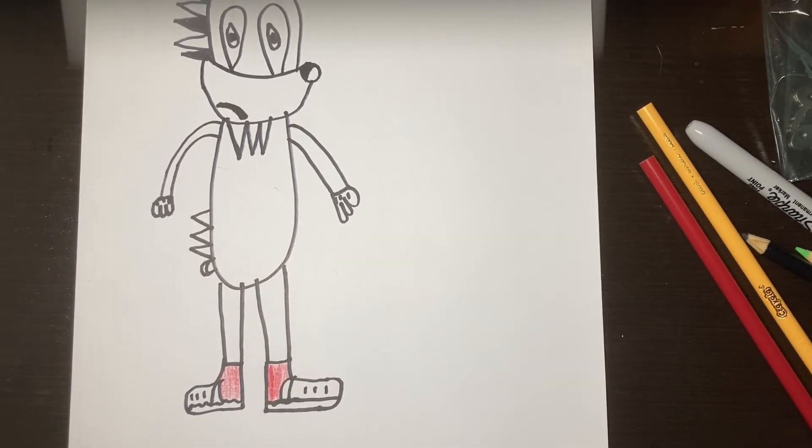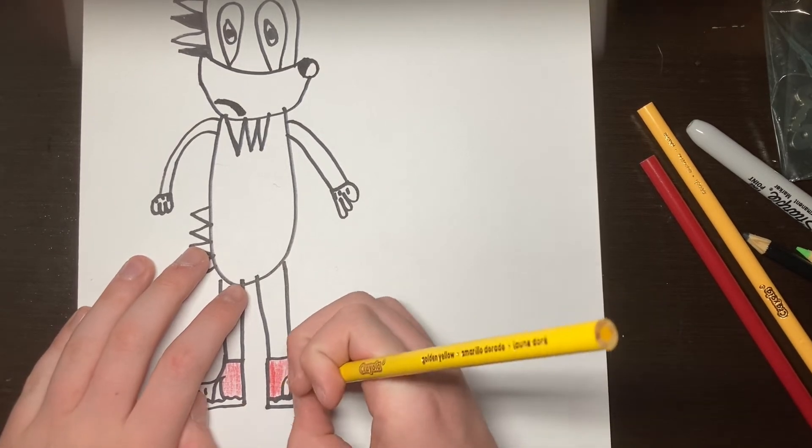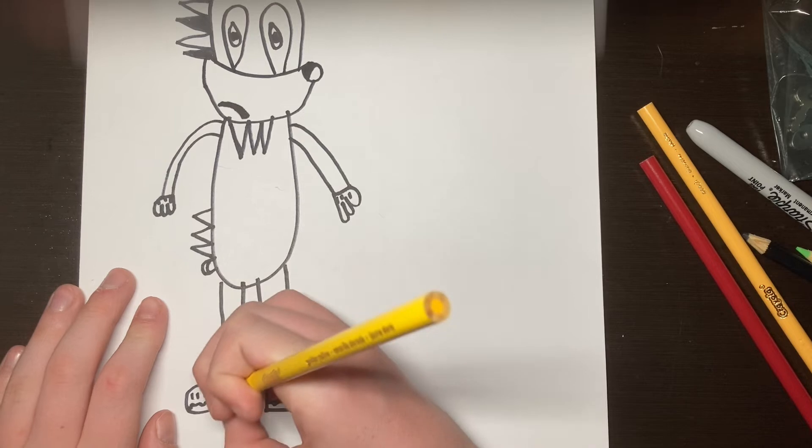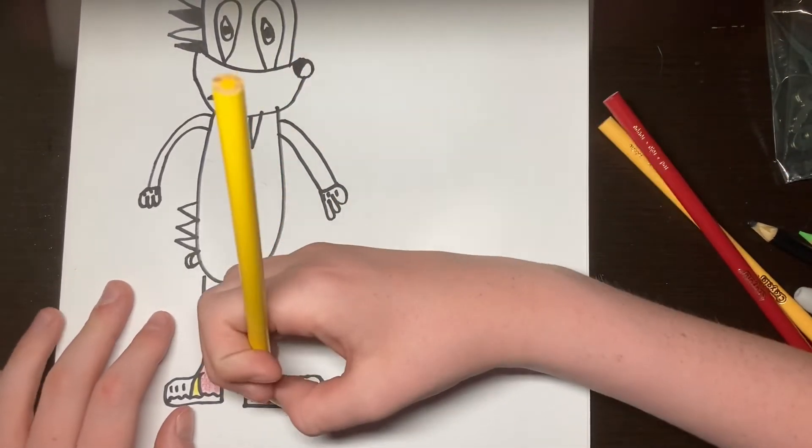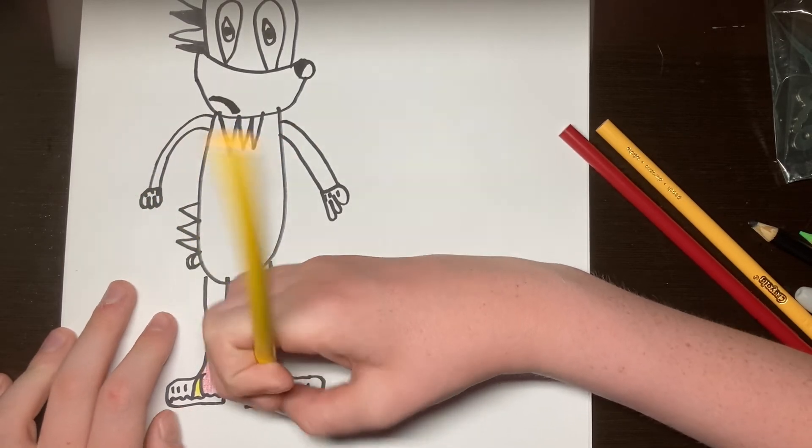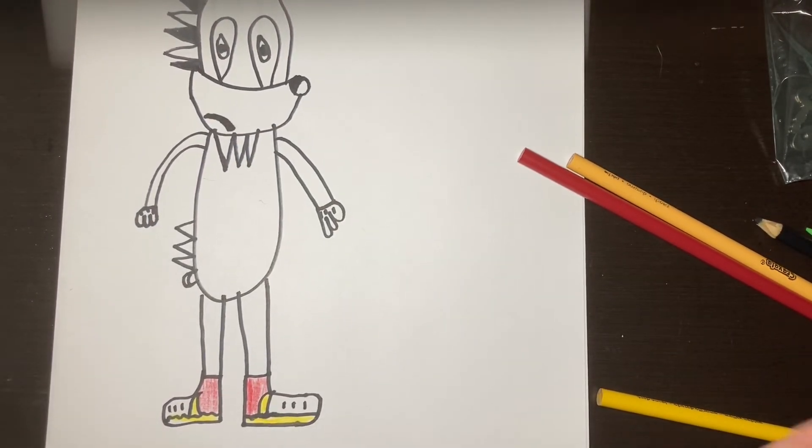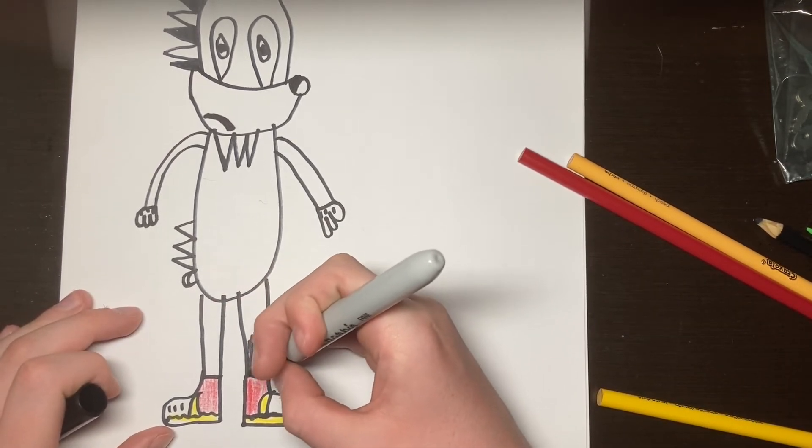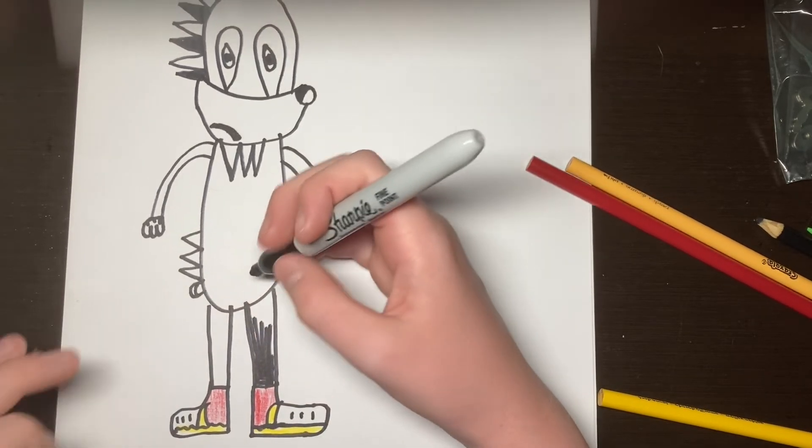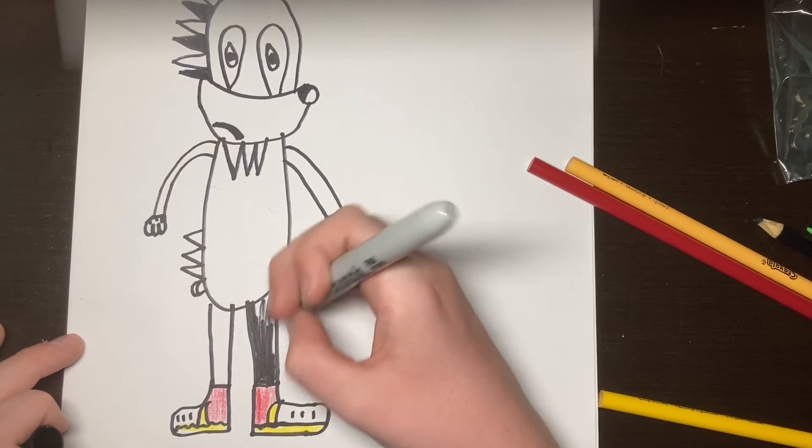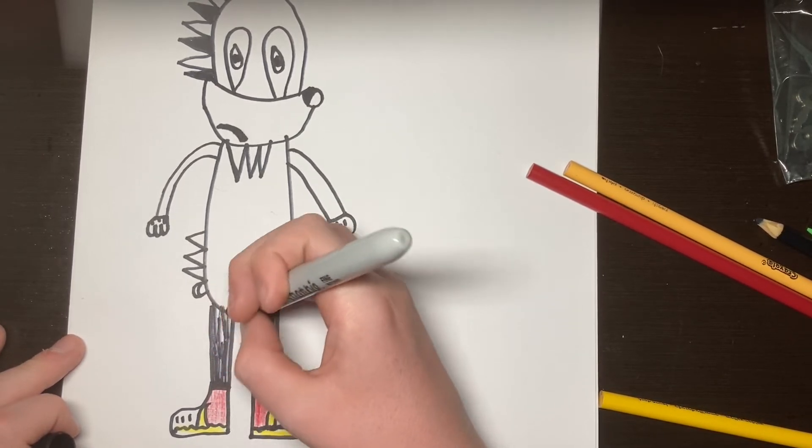And then grab the color, oh my god, color yellow to color in this and this. And leave, also use this. And then the same thing. Also color this in, oh my god, draw like this.